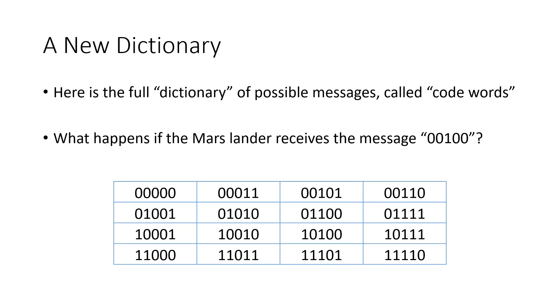So when we do that for all 16 of our messages, we now have a new dictionary of possible messages. We still have the same number of messages. We still have 16 messages. But now they're five digits long. This fifth digit that we added is our check digit. And when we have our dictionary of messages, we call these messages code words. We're going to talk about that more in the next lecture.